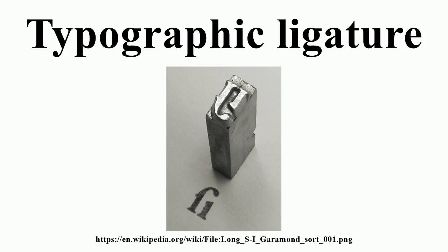Rarer ligatures also exist, such as one used in medieval Nordic languages for Ø, as well as in some orthographies of the Massachusetts language to represent a vowel, and one used in medieval Welsh to represent Ll, and other symbols originating as ligatures.